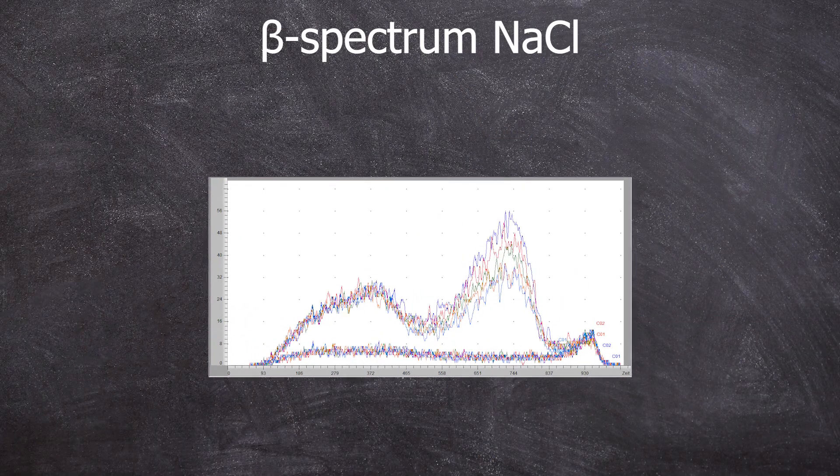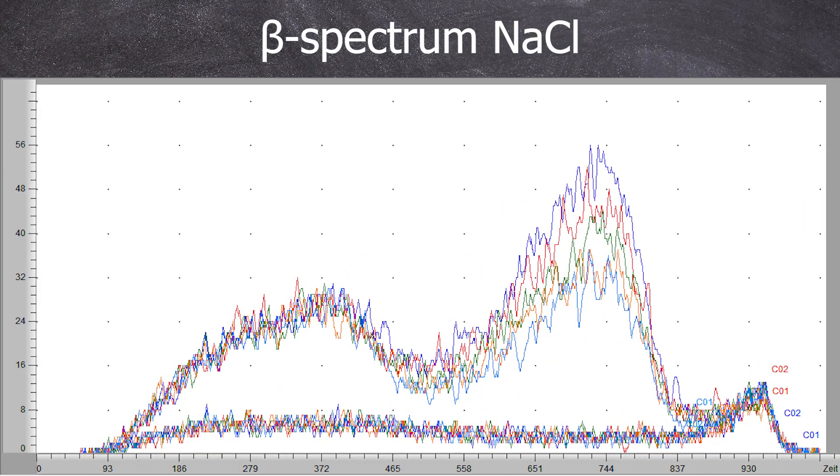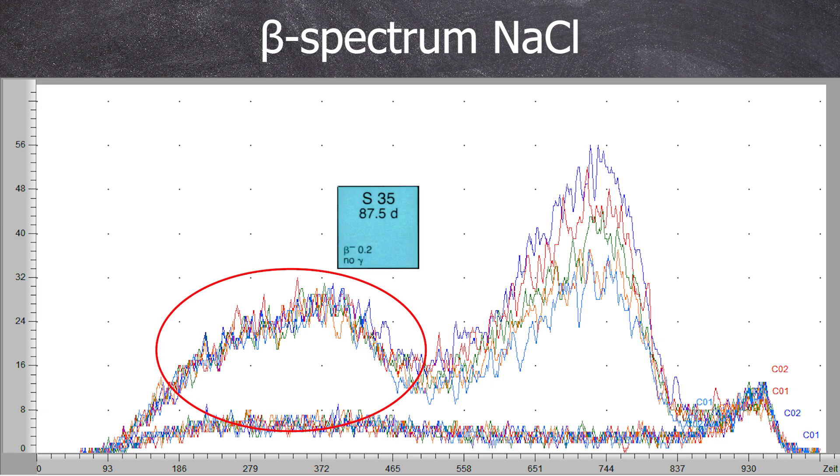In the beta spectrum, we can detect other products of our irradiation that don't have gamma lines such as sulfur-35 and chlorine-36. Or at least we should. The low energy signal is definitely sulfur-35.